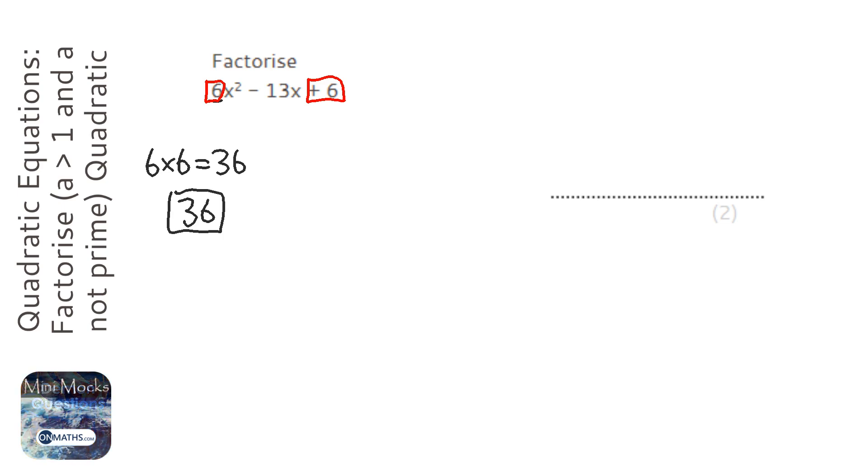Now it's 36 that we're looking for factor pairs for. And if you do the method that it's just x squared, so 1x squared, then you're kind of doing something similar to this, but you've got to multiply the coefficient of the x squared and the number together to find the number we're trying to find the factor pair for.